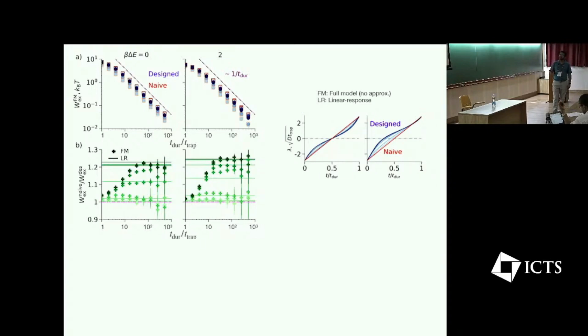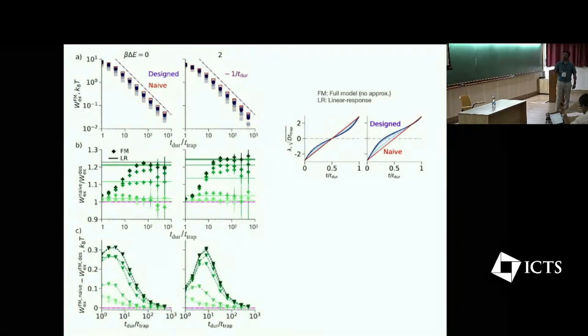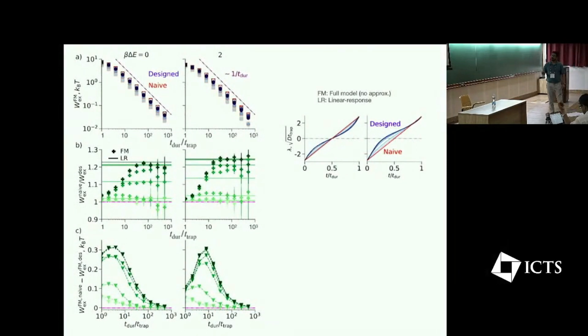And then we can actually compute the work saving by taking the difference between knife and design excess work. For extreme protocol duration, this work saving goes to zero. But in the intermediate regime, work saving is large because design protocol is performing better. So the overall message is that we keep the trap at different locations, we measure the force fluctuation. By measuring the force fluctuation, we measure friction coefficient. By measuring friction coefficient, we measure protocols. And using that protocol, the optimal protocol, if we drive the system, the excess work or dissipation is smaller.